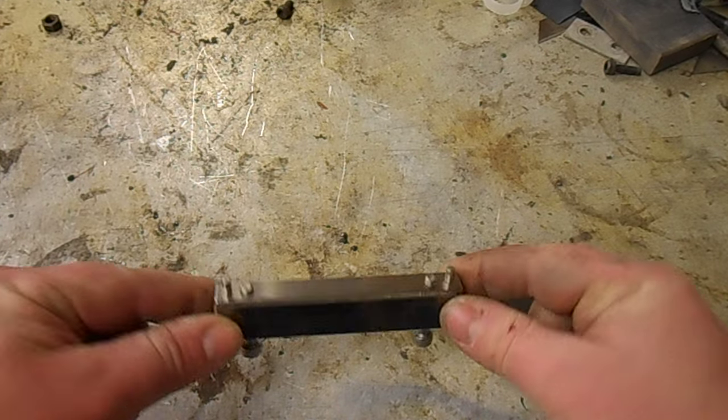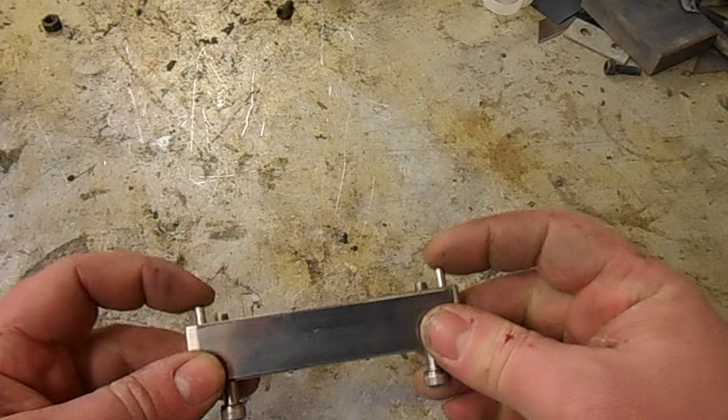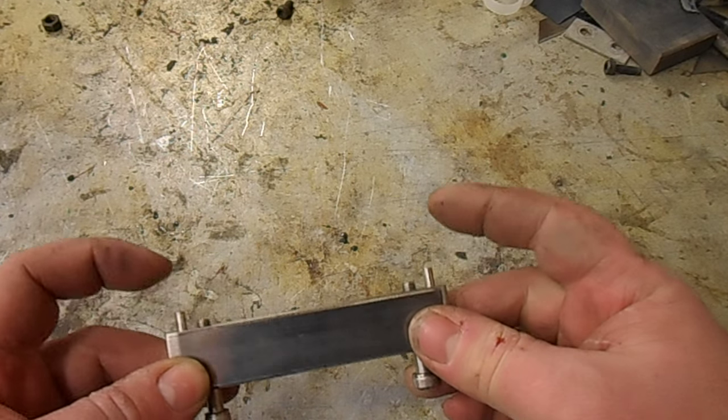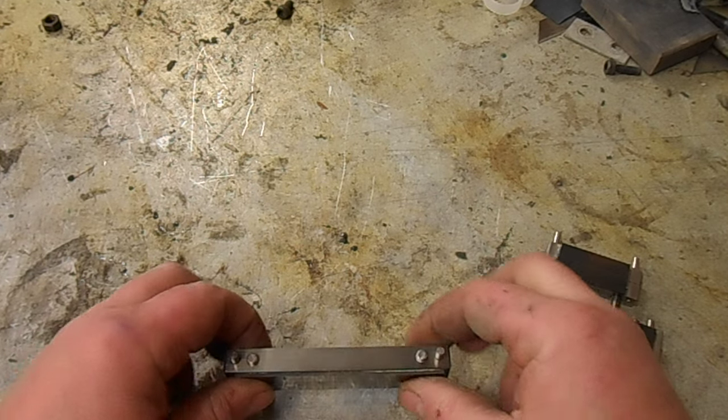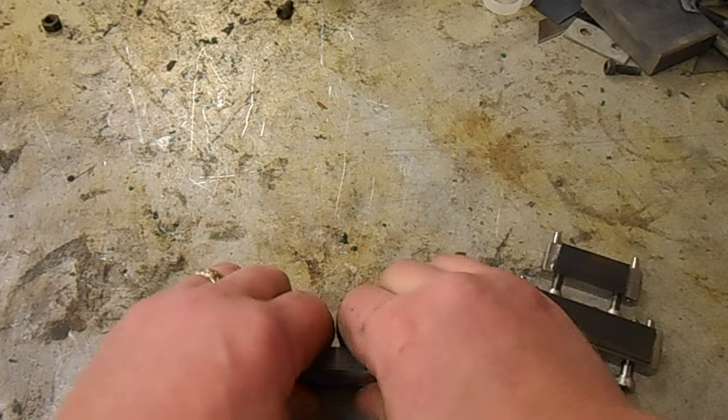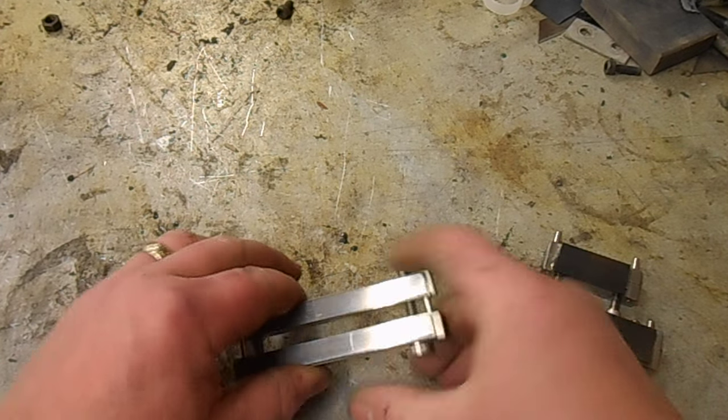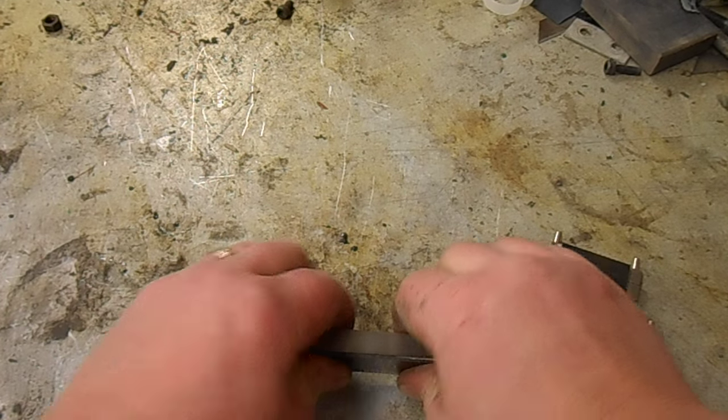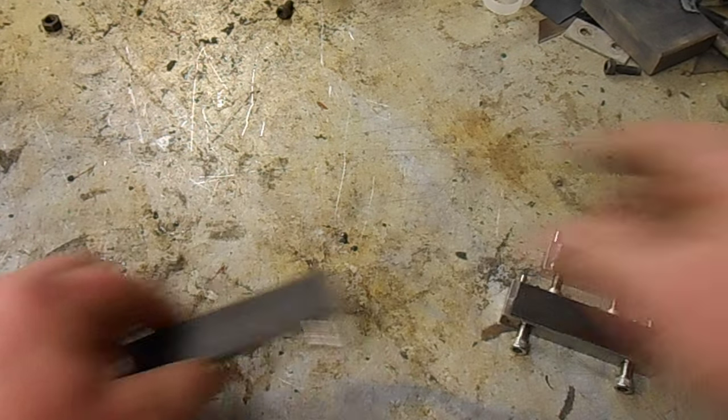The easiest way to get these apart is put them bolt down on the bench. Do not put them pin down. You obviously don't want to damage the ends of the pins or bend them or anything like that. Bolt down on the bench, and all I'm going to do is push the bottom side of the guide down. I'm just pinching the bottom side of it and I'm just going to push them apart.